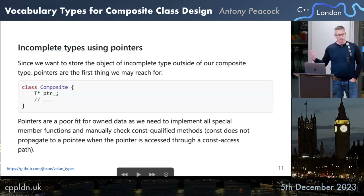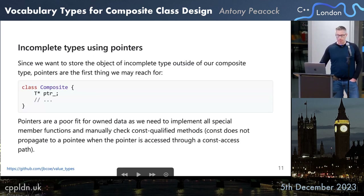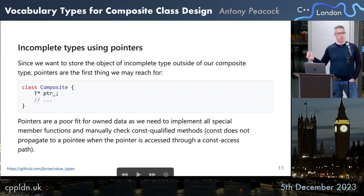If we want to use incomplete types, we need to store pointers. We can forward-declare a type, store a pointer as a member, and then define that type in the source file. Unfortunately, pointers are a poor fit because we need to implement all the special member functions. We also need to manually check const qualification of methods, because const does not propagate from a pointer. When you have a pointer member in your class, your class can be const, yet you can still call non-const member functions through that pointer.